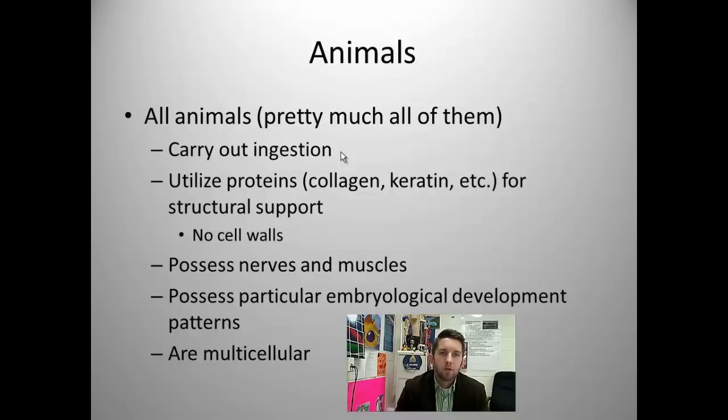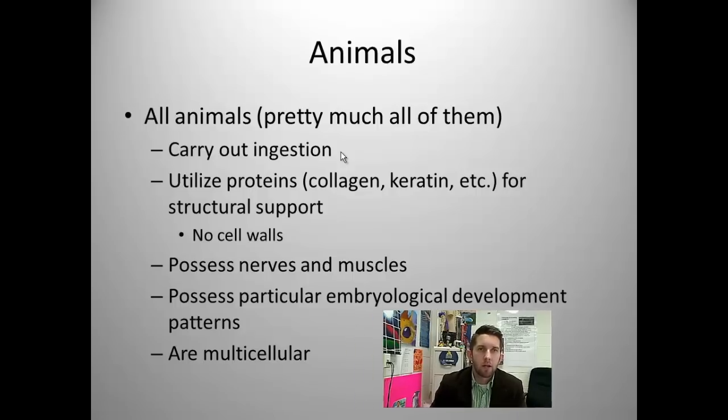We possess nerves and muscles, so true tissue. You're going to see that when we go through our phylogeny that there are animals that don't have true tissue, kind of our outgroup that we start with. We have particular embryological development patterns that set us apart from one another, and it's one of the homologies that we use in order to classify ourselves. And finally, we are multicellular. There aren't any unicellular animals.